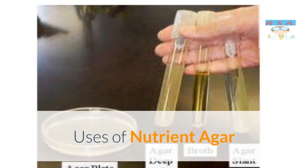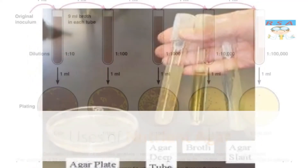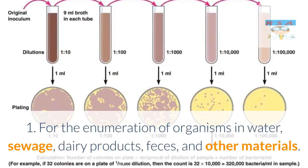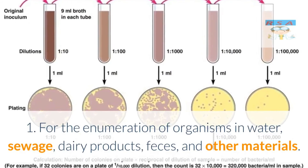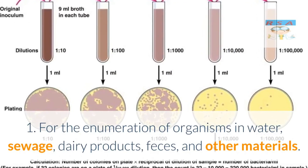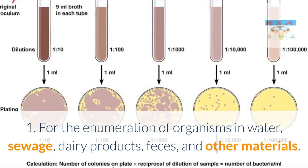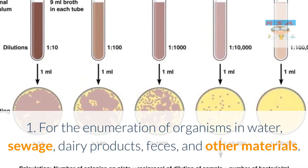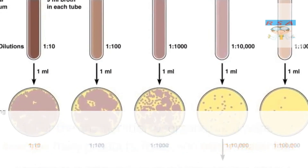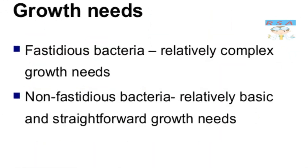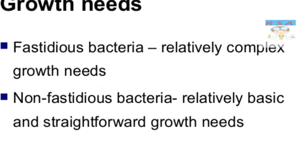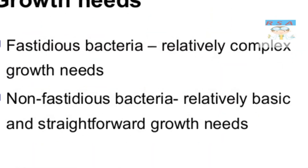Uses of nutrient agar. 1. For the enumeration of organisms in water, sewage, dairy products, feces, and other materials. 2. For the cultivation and maintenance of non-fastidious species.